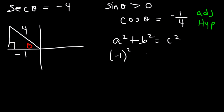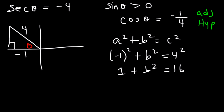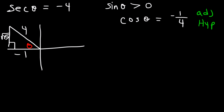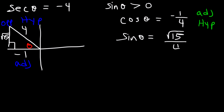So A is negative 1, we're looking for the missing side B, and C is 4. Negative 1 squared is positive 1, 4 squared is 16, and 16 minus 1 is 15. So B is equal to the square root of 15. And Y is positive in quadrant 2. So this is the adjacent side and the hypotenuse, and root 15 represents the opposite side. Now let's find the value of sine theta. Sine theta is going to be the opposite side, square root 15, divided by the hypotenuse, which is 4.